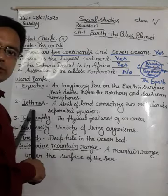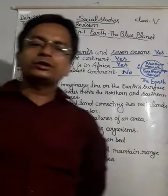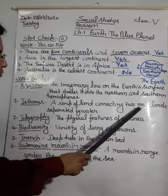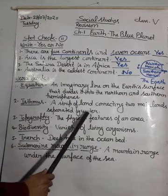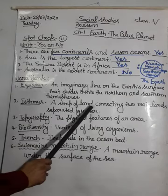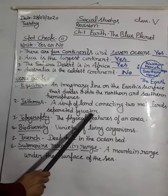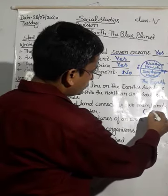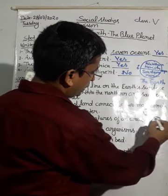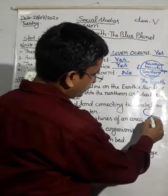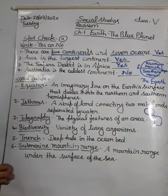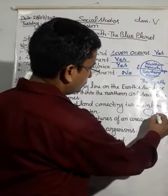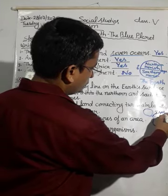Next is Isthmus. What is Isthmus? A strip of land connecting two mainlands separated by water. Just for example, you can see here — suppose this is a land area, and this land area is connected by a strip. That strip is called Isthmus.